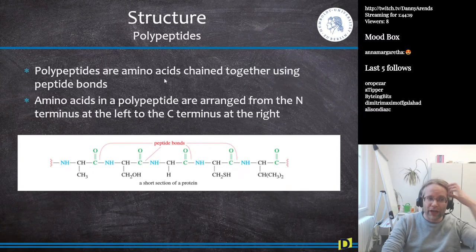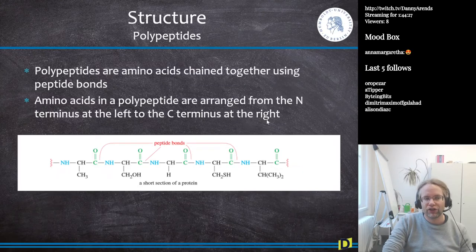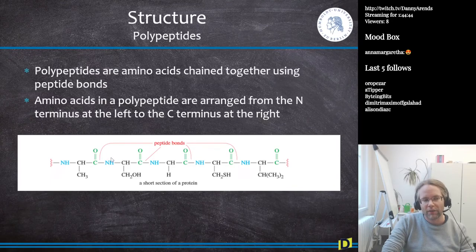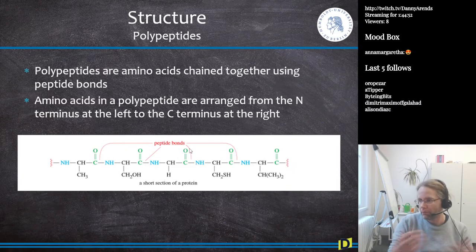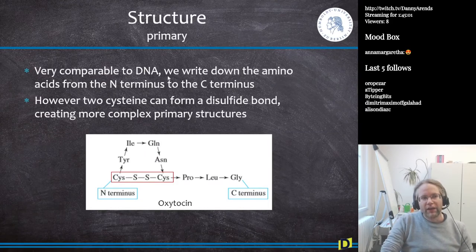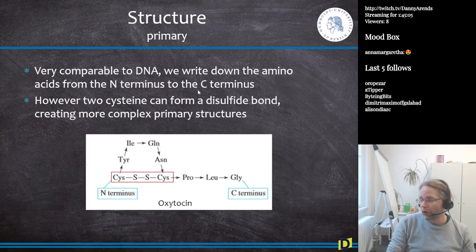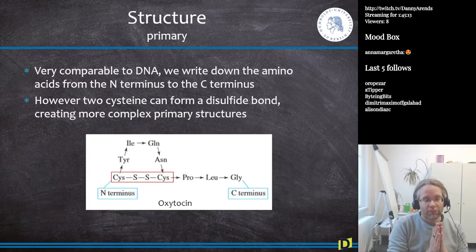Polypeptides are amino acids chained together using peptide bonds. They are always written from the N-terminus at the left to the C-terminus at the right. The acid group of the first amino acid is coupled to the amino group of the second - these are called peptide bonds. This is comparable to DNA where we write from 5' to 3'. In proteins, two cysteines with sulfur groups can form disulfide bonds.